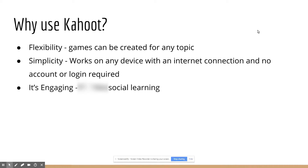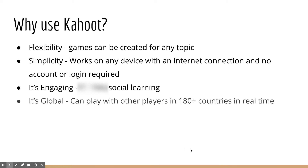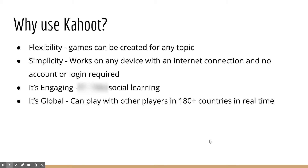It's engaging — it inhibits social learning and also gives us the opportunity to make our lessons more relatable to students. And it's global. Students can play with other players in over 180 countries in real time. So you can create a Kahoot and play with somebody in China or Brazil, or somewhere that, as a social science teacher, you're teaching your students about — giving them the opportunity to interact with others globally.